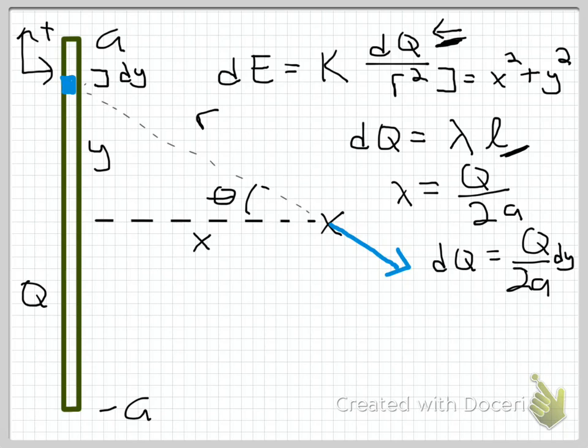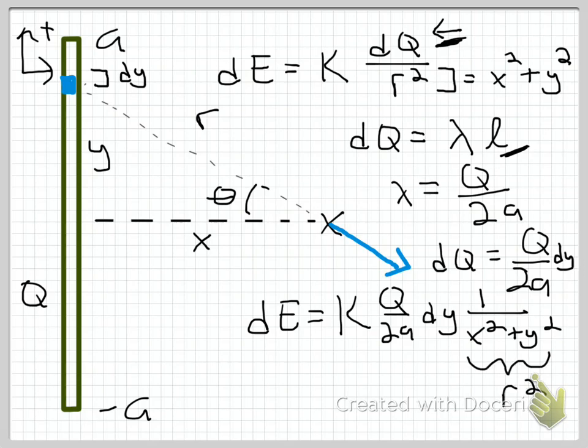What we've come up with here now—dE is going to equal K, just my constant, times Q over 2a dy, and that's going to be times 1 over x² + y². I've written it a little awkwardly just so you can see the components. Here's r². Here is my linear charge density. Here is the length over which I'm evaluating. And of course, K is just a constant. What we've done is gotten the magnitude of this vector right there.